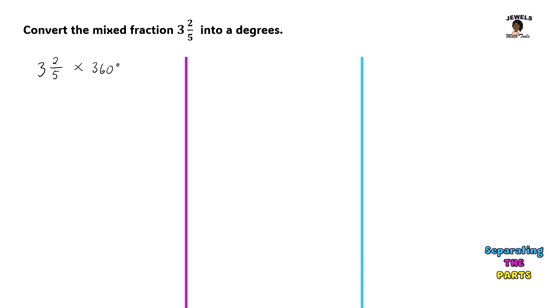Now in this session, we're going to be separating our parts to convert this into degrees. That means I'm separating my whole number and my fractional part, and I'm going to be multiplying both of those parts to 360. So I will be multiplying my 3 wholes times 360 degrees, and I also will be multiplying my fraction of 2/5 to 360 degrees.